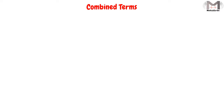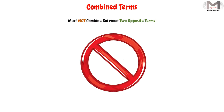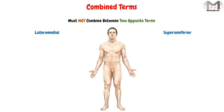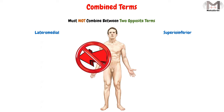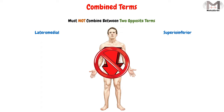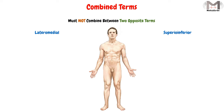I mentioned a note at the beginning: combined terms must not combine between two opposite terms, like lateral and medial, or superior and inferior. That makes no sense, because there isn't a structure that moves towards the midline of the body and away from it at the same time, or a structure that moves towards the head and towards the feet at the same time. That's what I mean by this note, and this is almost everything about the combined terms.